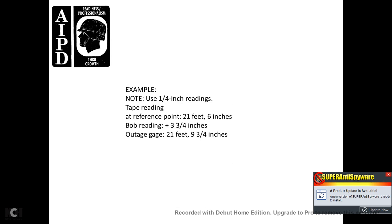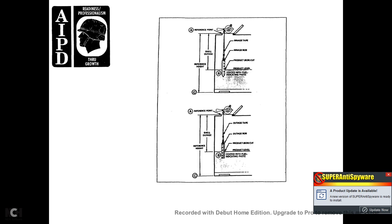40. Example: tape reading at the reference point is 21 feet 6 inches; the bob reading is plus or minus three-quarters of an inch; the outage gauge is 21 feet 9 and three-quarter inches. Looking at the figure: you have the reference point, the product level cut coated with fuel indicating paste, and the shell outage from the reference height for your outage measurement.